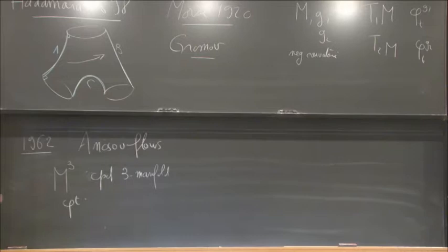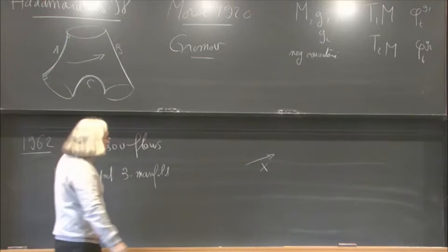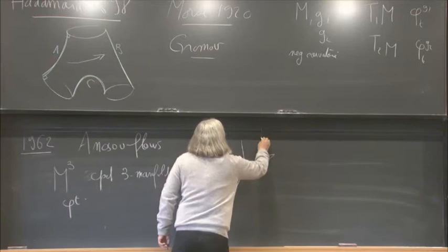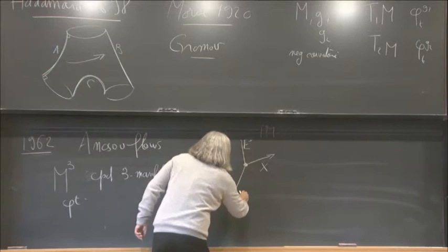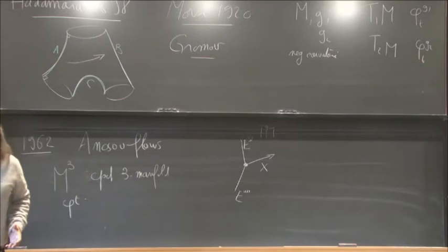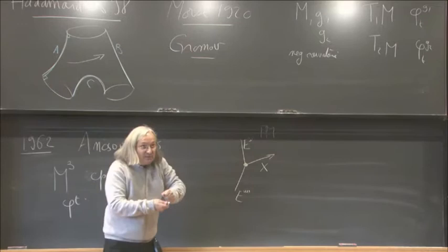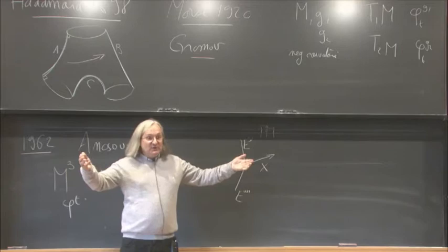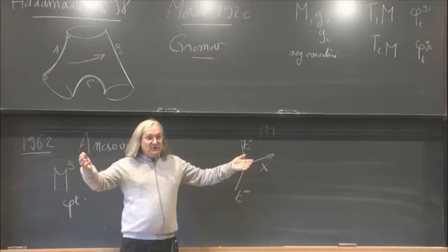A flow is called Anosov if, denoting by X the vector field associated to the flow, it is possible to construct two line bundles in the tangent bundle — one called the stable bundle E^s and the other the unstable bundle E^u — such that when you flow along φ_t these bundles are invariant by the differential of the flow: vectors tangent to E^s are contracted and vectors tangent to E^u are expanded. A flow is Anosov if it is expanding and contracting.